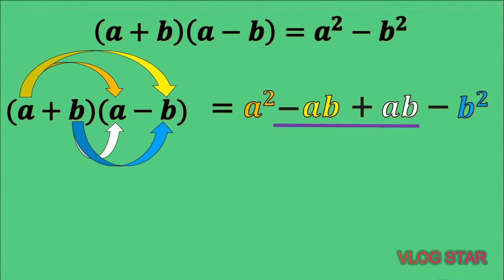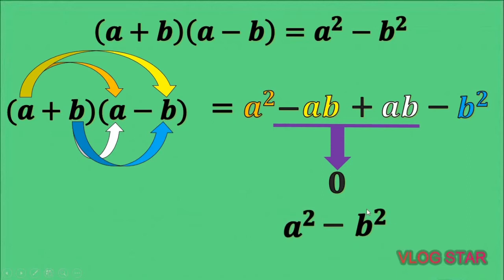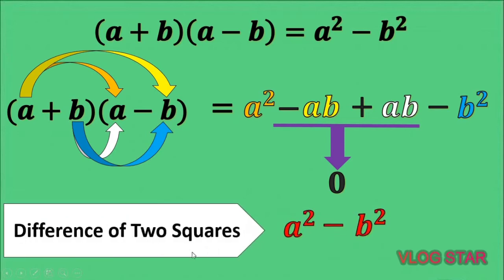As you can see in our result, we have similar terms: negative ab and plus ab. Since they differ in sign, they subtract and the result becomes zero. So what remains are a squared minus b squared — the same result as our shortcut above.